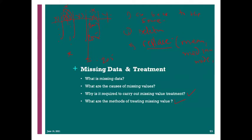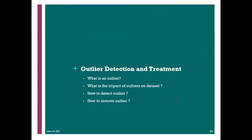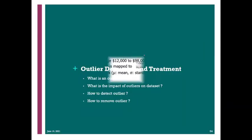Another very important thing we do in pre-processing is outlier detection. Outlier detection is more challenging compared to missing values, because with missing values you can see something is missing — but with outliers the data is there, it's just not good. It will confuse your algorithm, so you need to remove it.